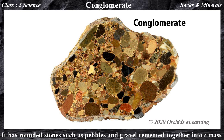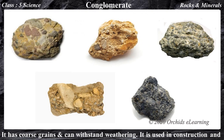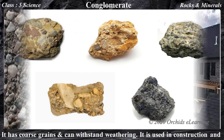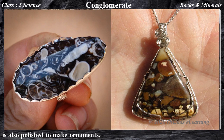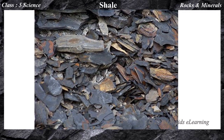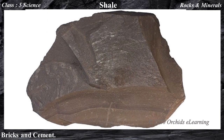Conglomerate — it has rounded stones such as pebbles and gravel cemented together into a mass. It has coarse grains and can withstand weathering. It is used in construction and is also polished to make ornaments. Shale — it is made of solidified clay and comes apart in thin layers. It is used in making bricks and cement.